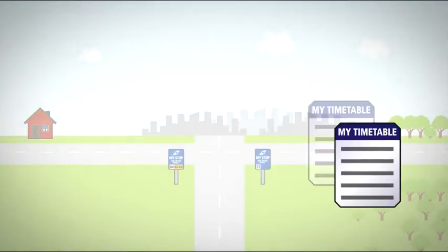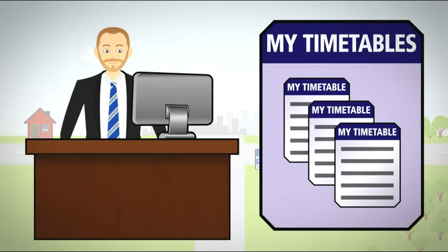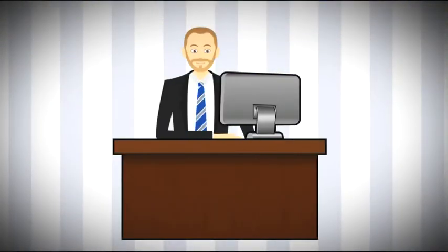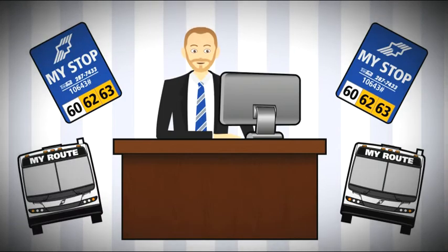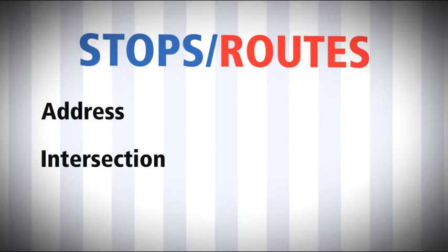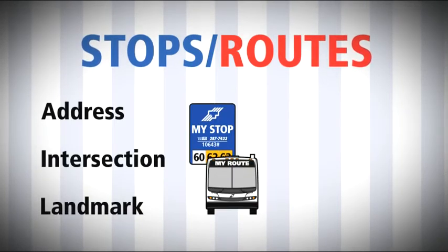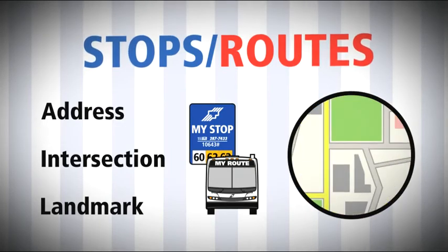You can save your customized timetables in MyTrips and access them later. Want to know what stops or routes are nearby? Go to our Stops or Routes section. Enter an address, intersection, or landmark. We'll then list the nearest stops and routes for you and show them on a street map that you can zoom and pan.